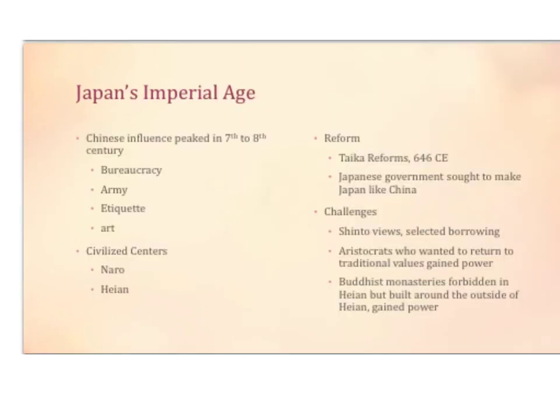Moving on, we will talk about Japan's imperial age. Imperial means of or relating to an empire. Chinese influence peaked in Japan from the 7th to the 8th century. They set up, modeled after the Chinese style of bureaucracy, army, etiquette — etiquette is like manners — and arts. There are two civilized centers, Nara and Heian. There's also the Taika reforms in 646 CE.